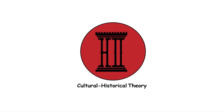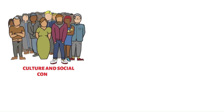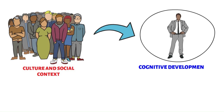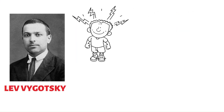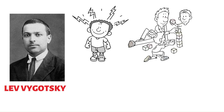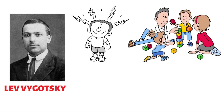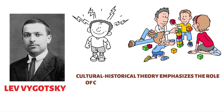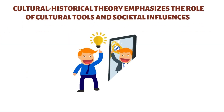Cultural Historical Theory examines how culture and societal context shape cognitive development and personality. Lev Vygotsky proposed that individuals learn and develop within the cultural context through social interactions and language. The theory emphasizes the role of cultural tools and societal influences in shaping personality and cognitive processes.